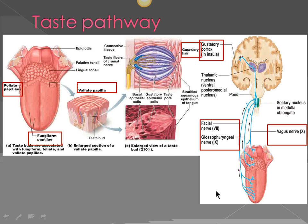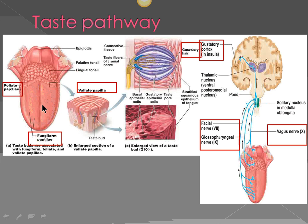Here it shows all the structures. Let's first look at the gross surface of the tongue. Here is the anterior two-thirds and the posterior one-third. Do not confuse the posterior-most area as having taste — those bumps are due to lymphatic tissue called lingual tonsil. On most of the surface you have fungiform papillae, which are mushroom-shaped. We also have filiform papillae, which give roughness to your tongue but do not contain taste buds. The fungiform do contain taste buds.